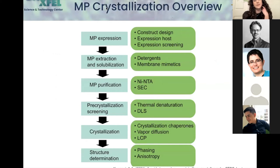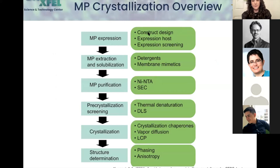This is an overview of the process. First, identify the membrane protein you want to work with, then think about how to optimize each step. For the expression part, you'll want to explore many ideas for construct design. You can't just take the wild-type protein and express it, get a lot of protein, and then move forward to crystallize it. That's usually a little more complicated — you have to do construct design.